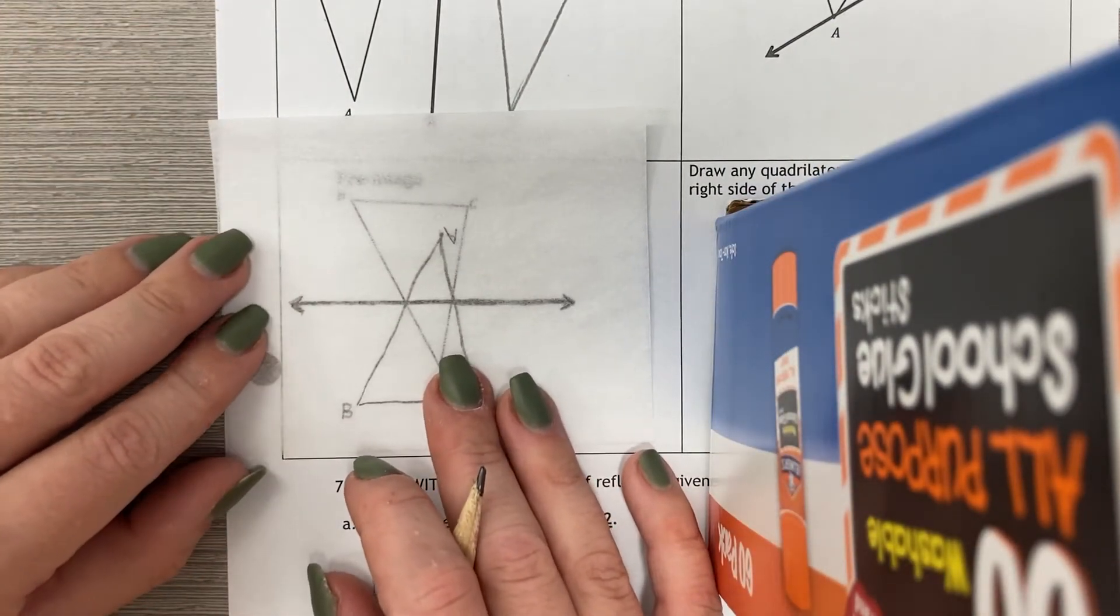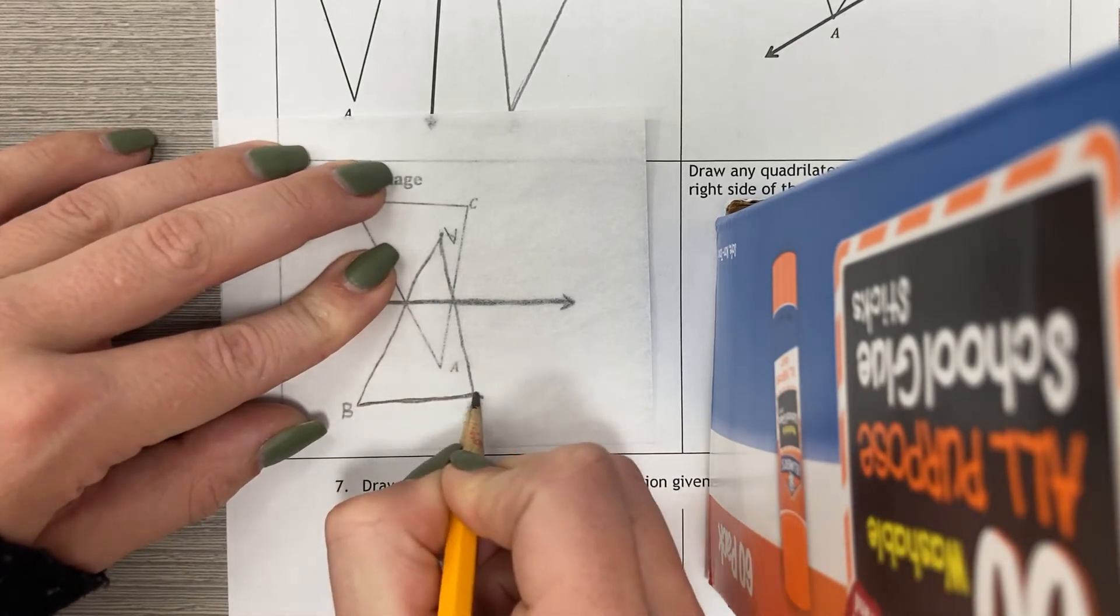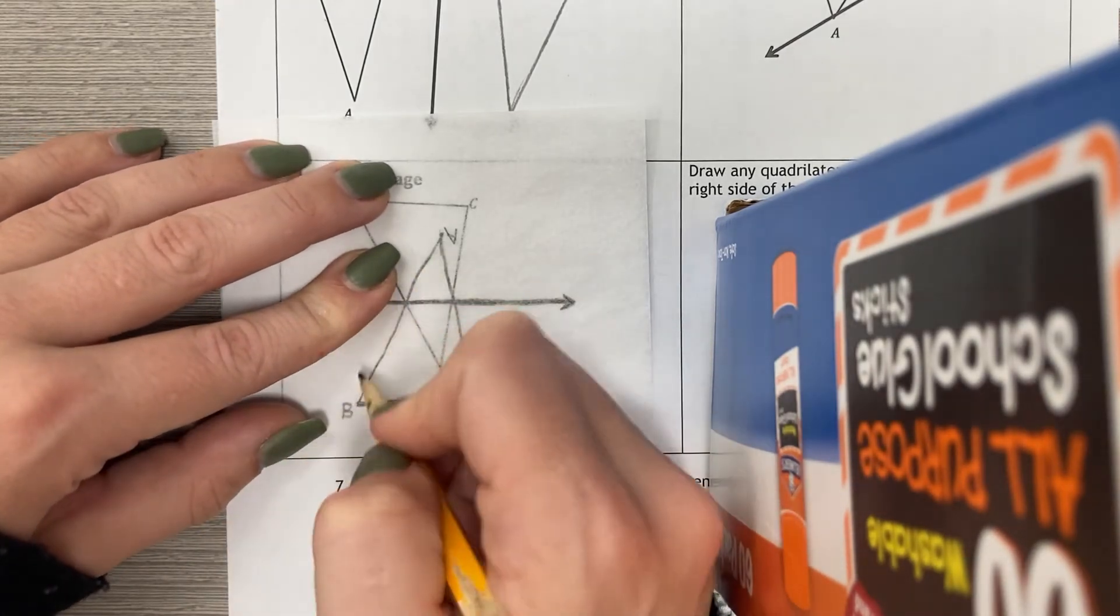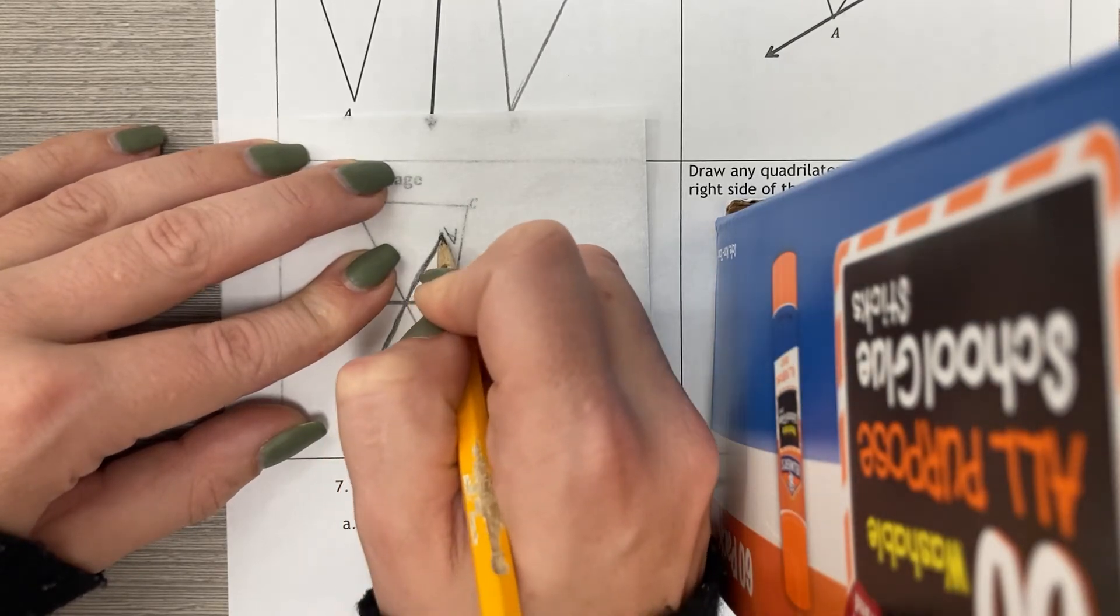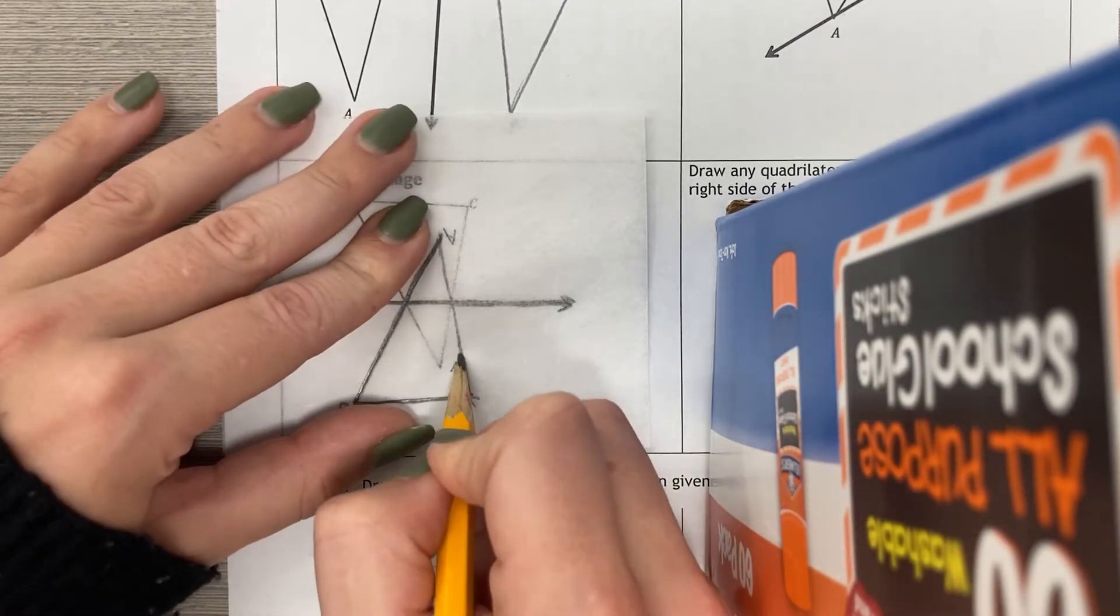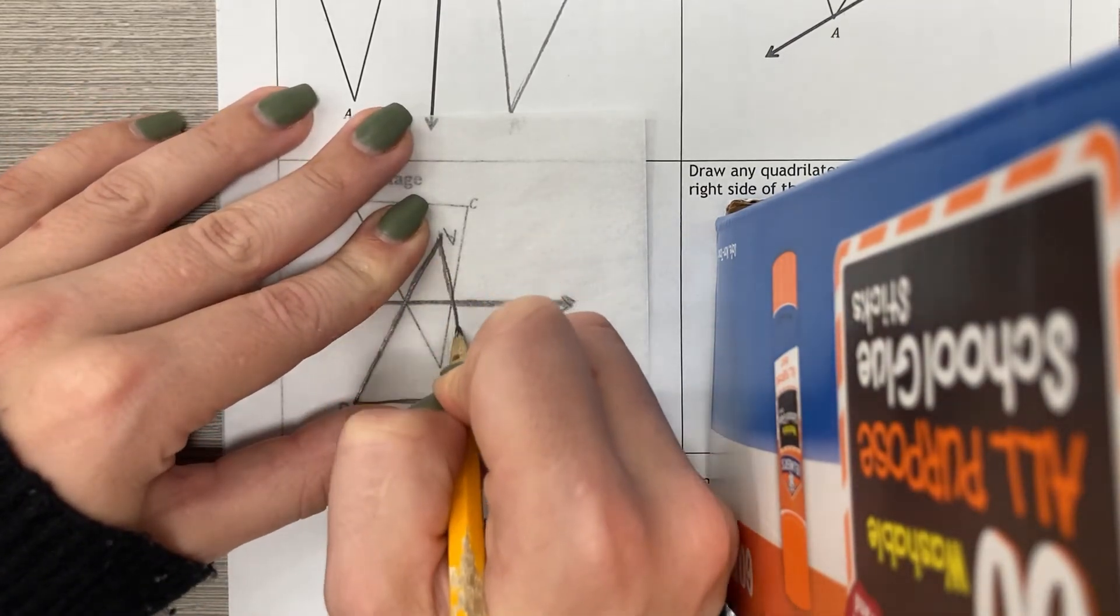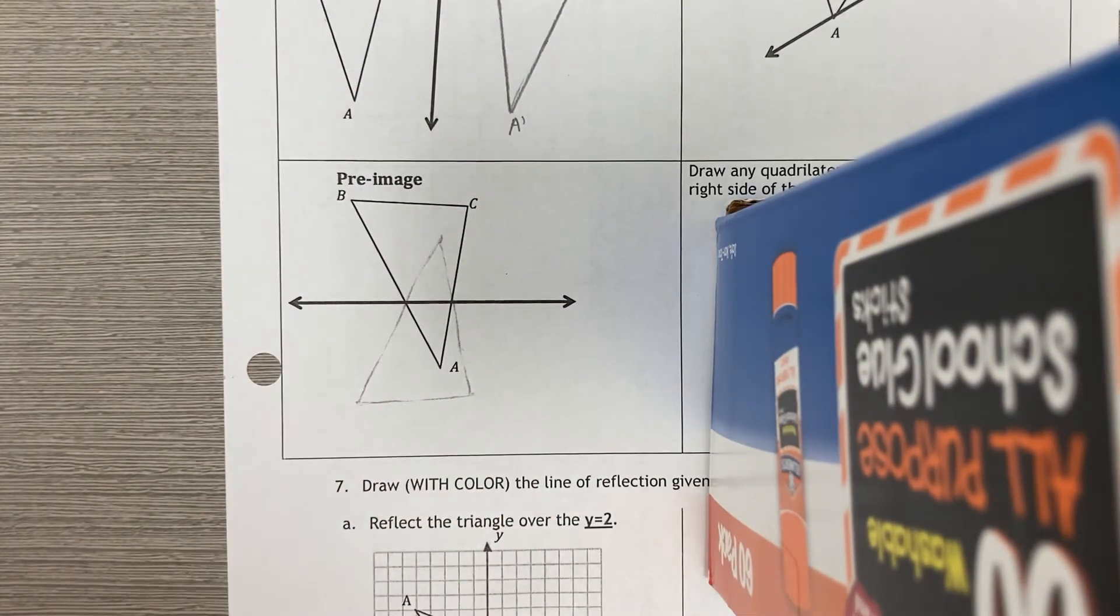And now when I place that line back down I'm going to retrace the triangle. I'm pressing down pretty hard with a pencil. It must be a pencil here in order for the tracing paper to do what we want it to do. When I lift it up I have a good start.